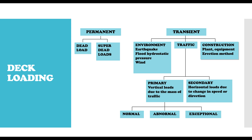Now let's come to the transient load. The most dominant one is the traffic load, though we also have other types which include environmental loads — wind load, and earthquake loads depending on the location. Then we have construction load, because during construction of the bridge there is always a need for erection depending on the method of construction. You need to make sure that during and after construction, your bridge still satisfies the design specification. But the most dominant part of the transient load is traffic loading.